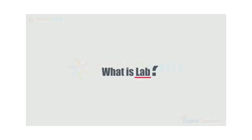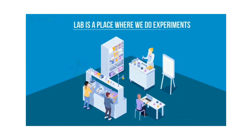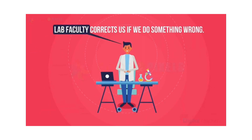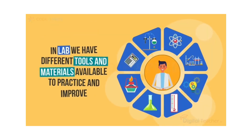English language lab. What is a lab? A physics lab, biology lab, or any lab is a place where we do experiments, practice, and learn things. Lab faculty corrects us if we do something wrong. Lab allows us to practice until we are successful. A lab is a place where we have different tools and materials available to practice and improve our skills.